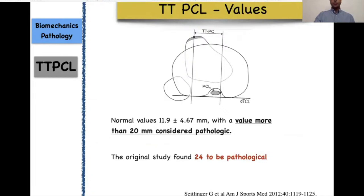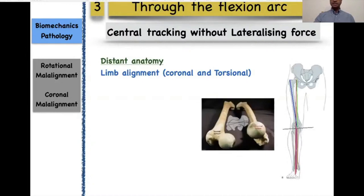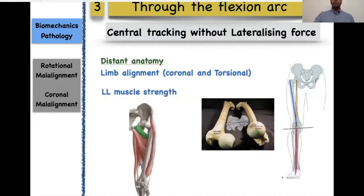We also need to understand that abnormalities away from the knee joint can cause lateralizing force on the patella. This includes valgus alignment, rotational abnormality, or torsional abnormality such as excessive anteversion of the femur. Significant weakness of the hip abductors or rotators can cause relative internal rotation of the femur and patellar instability.